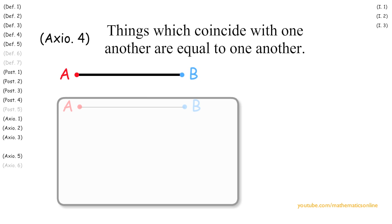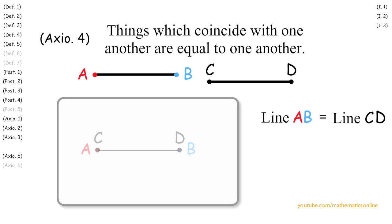Now suppose we have line CD, with its components inside the palette as well. If we move points A and B so that they coincide with points C and D respectively, we can see that this actually changes line AB so that it is congruent to line CD, hence things that coincide with one another are equal to one another.